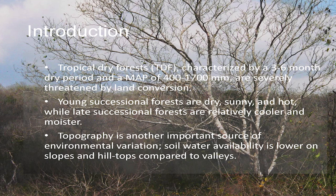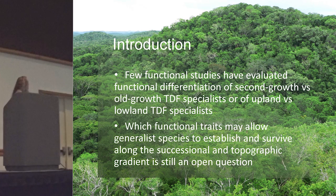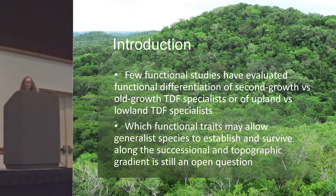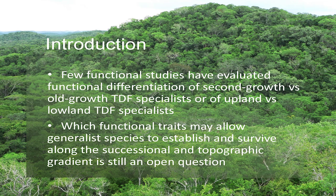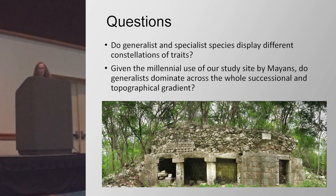Topography is also an important source of environmental variation, especially for the forests where we were working. Previous studies have found that soil water availability is quite low on slopes and hilltops compared to valleys and flat areas. One of the things we were wondering about was if functional traits are also different based on succession and topographic position, and very few functional studies have evaluated functional differentiation of second growth and old growth tropical dry forest specialists, or compared hill versus flat area specialists. Which functional traits may allow a generalist species to establish and survive along the topographical or successional gradient is an open question.